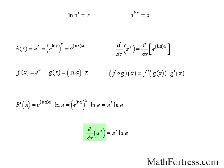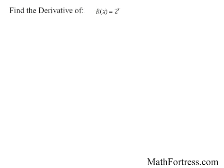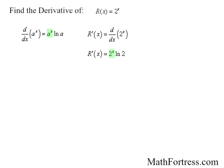So we add this derivative to our arsenal to find the derivative of any exponential function, including those with base e. The derivative of an exponential function is equal to the function itself times ln of a. Alright, let's go over some examples. Find the derivative of r of x equals 2 to the power of x. This is an exponential function, so the derivative of r of x is going to be equal to the function itself, 2 to the power of x, times ln of the base, which is 2.